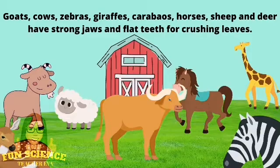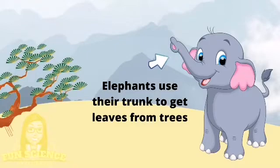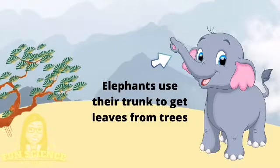Goats, cows, zebras, giraffes, carabaos, horses, sheep, and deer have strong jaws and flat teeth for crushing leaves. Elephants use their trunk to get leaves from trees.